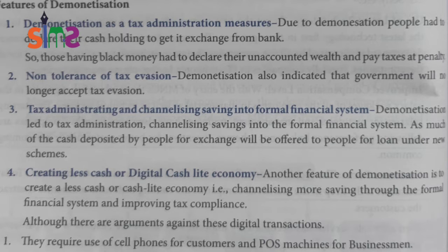There were also illegal activities funded by black money — terrorism and crime around the world required large sums of money. Much of the tax-related illegal funding was saved and stored as black money.